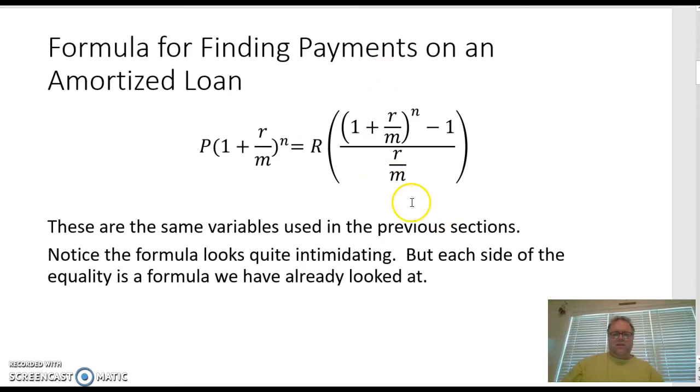Let's take a look at the formula here. You notice this is a pretty big formula, but it's nothing that we haven't already looked at. The right side here is really just our annuity formula and this left side is just our compound interest formula. When we set those equal to each other, we're going to get this amortized loan. Let's take a look at an example and see how we can plug these variables in.